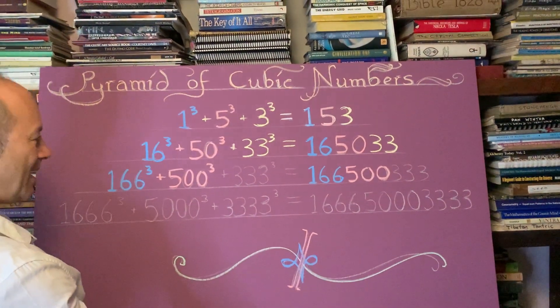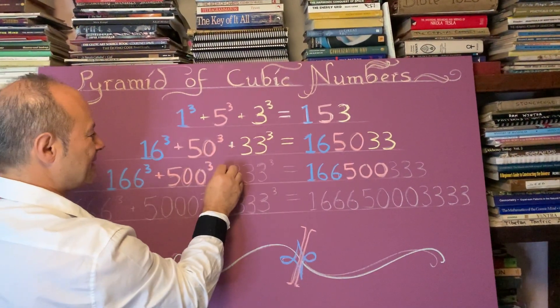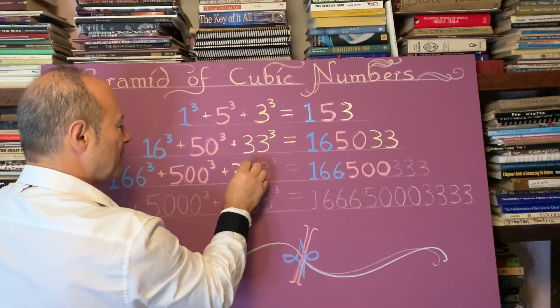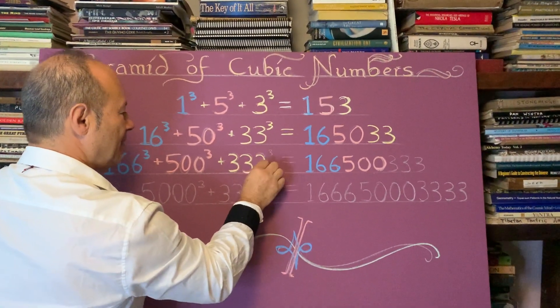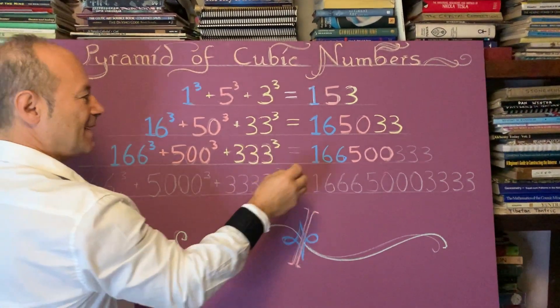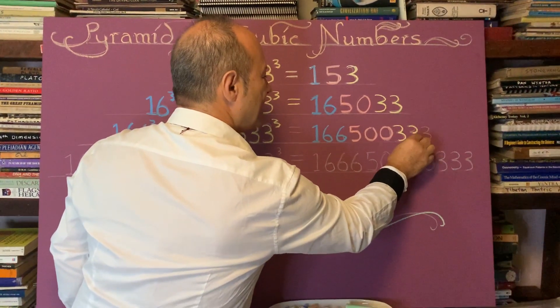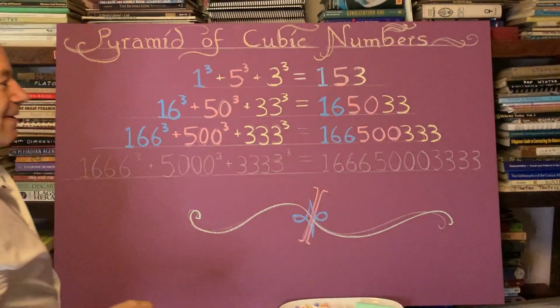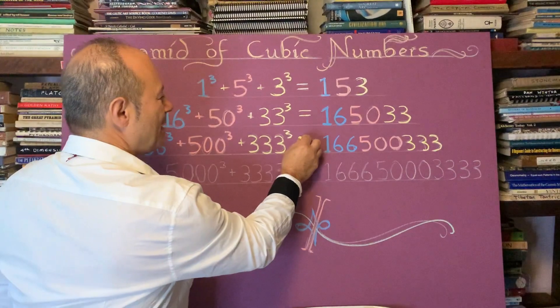And in yellow we're going to watch how the threes extend. We're going to take triple three and we're going to cube that number. And the number still ends in a three. That's quite remarkable.